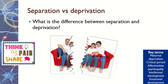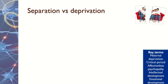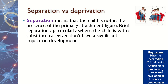The first thing to do is think about what is the difference between separation and deprivation. You might want to pause the video and have a quick think. Separation is when a child's attachment figure isn't present because of a situation — for example, the child or the mother might be taken into hospital. When that happens, a substitute caregiver is there: that could be another parent, a grandparent, an auntie or uncle. It doesn't have a significant impact on development because the child is still being provided with emotional care.